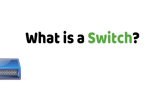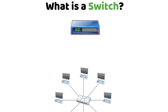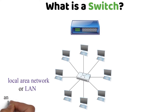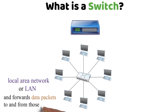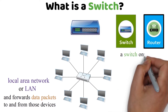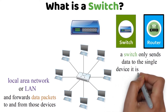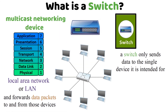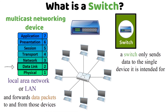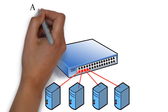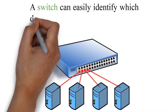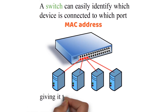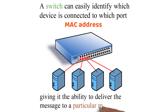What is a switch? A switch connects devices within a network, often in a local area network or LAN, and forwards data packets to and from those devices. Unlike a router, a switch only sends data to the single device it is intended for. A switch is a multi-cast networking device that works under the data link layer of the OSI model. A switch can easily identify which device is connected to which port by using a MAC address, giving it the ability to deliver the message to a particular machine.